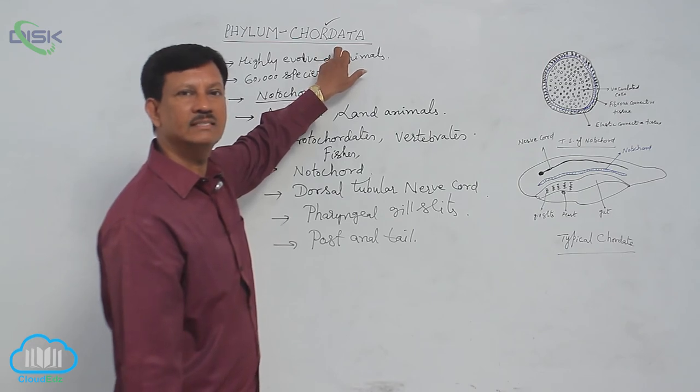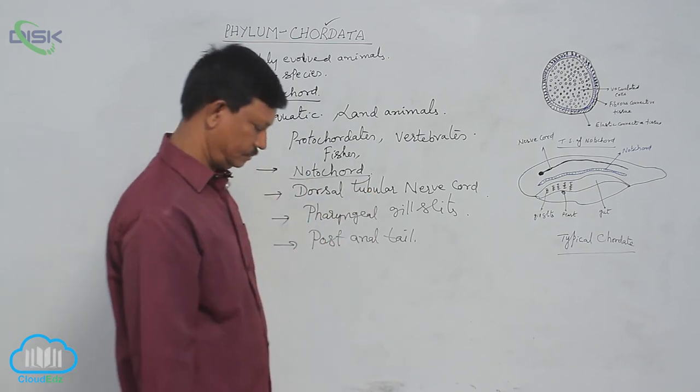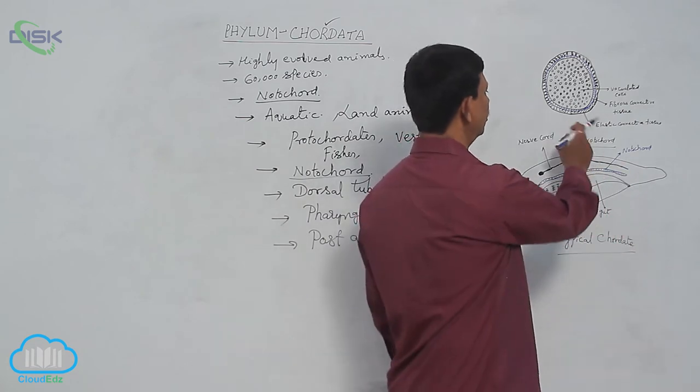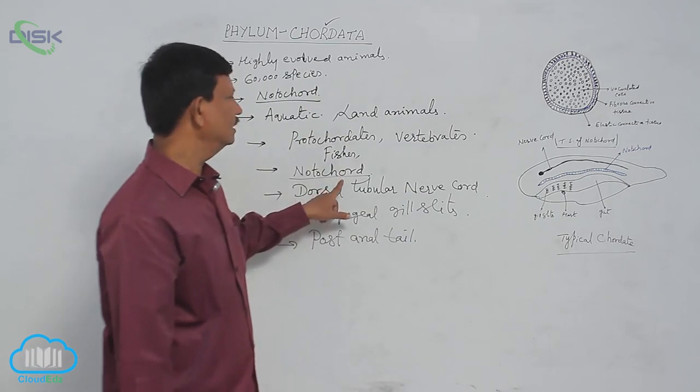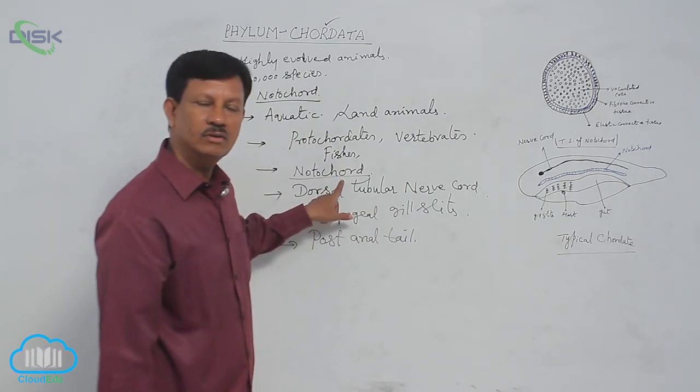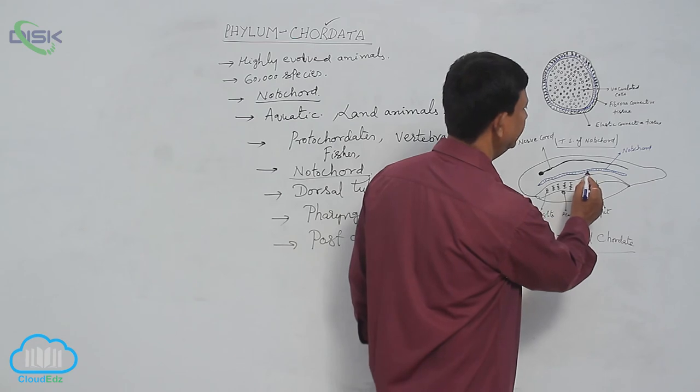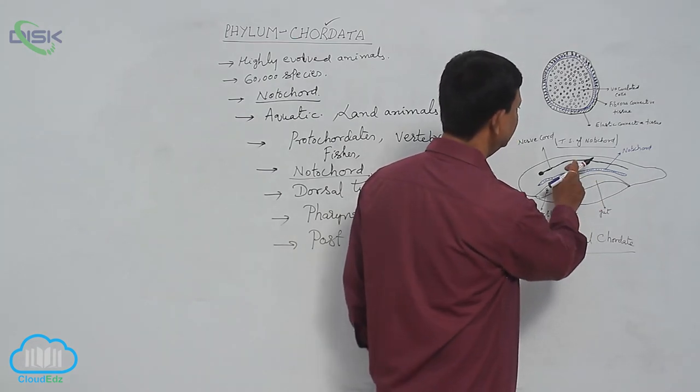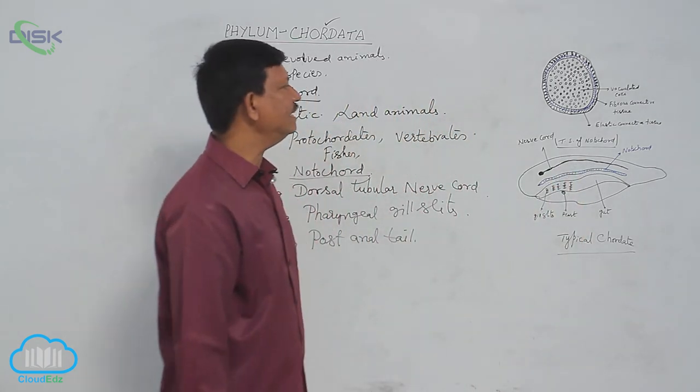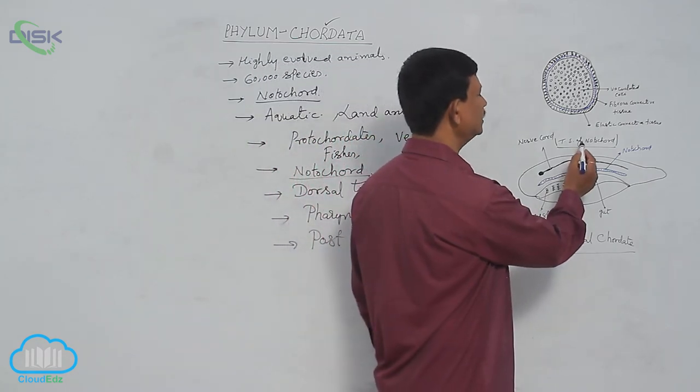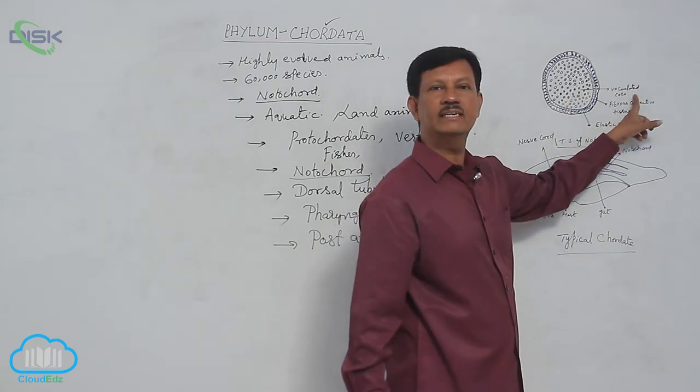Now we have to discuss these characters. First, we have to discuss the notochord. You can see this is the transverse section of the notochord. Notochord is a flexible, rod-like structure situated on the dorsal side of the body, in between the alimentary canal and nerve cord. The internal structure - if we see the transverse section of notochord, the inner side is filled with vacuolated cells.